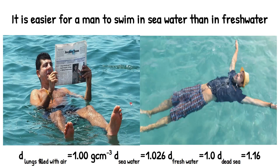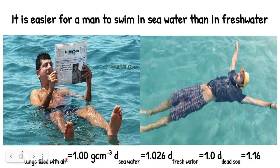In seawater, due to the presence of dissolved salts and minerals, the density is higher, so less of the body needs to be submerged to float. The Dead Sea has a density of 1.16, so without submerging much of your body you can easily float there. It all depends on the balance of density — if the water's density is lower, you have to submerge more of the body, whereas in the Dead Sea the density is much higher than our body, so very little needs to be submerged.